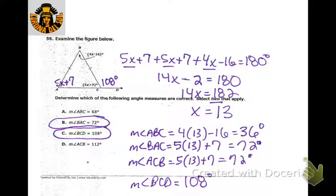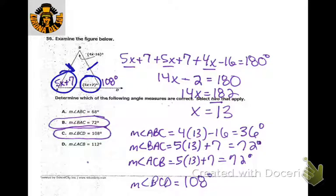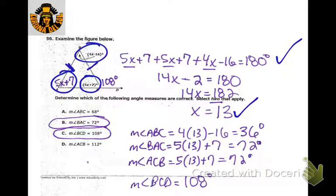This one is isosceles, so the base angles are congruent — if one is 5x plus 7, so is the other. That helps a lot. Add up the three angles of the triangle and set it equal to 180, solve for x, getting x equals 13. Plug it into each angle expression to find all the angle measures, and pay attention to how many answers are correct.